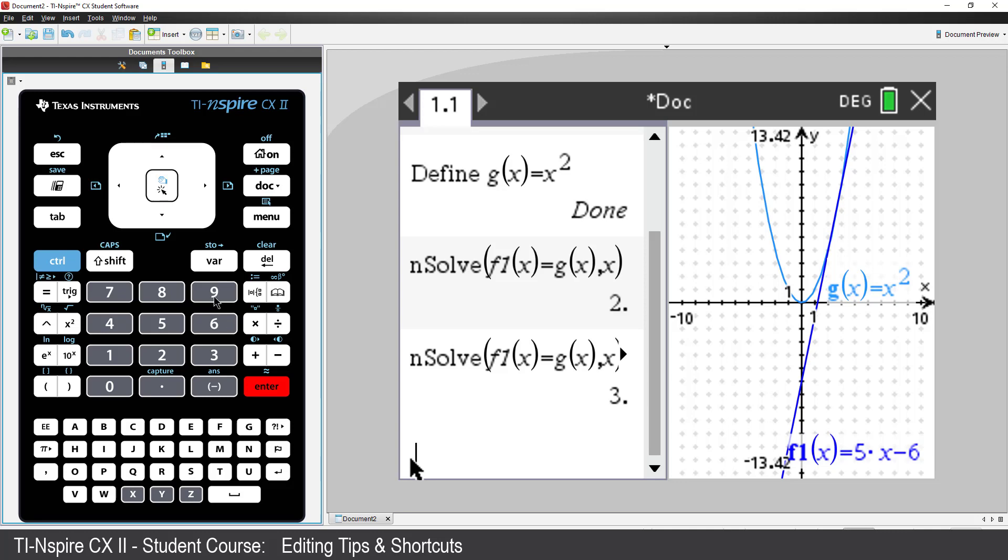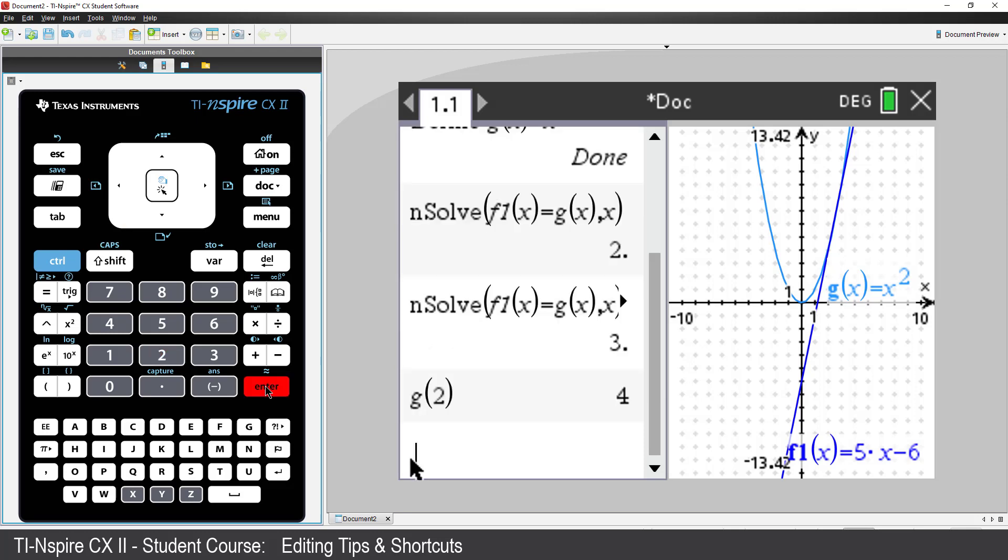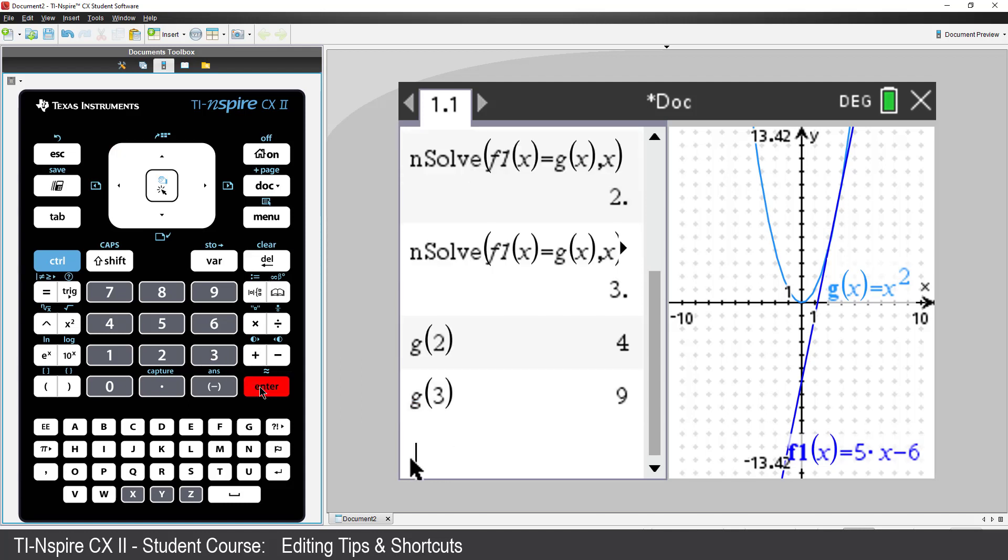I've used function notation for this. So if I want to determine the corresponding Y values, I can just evaluate G of 2 and G of 3, and they give me the corresponding Y values. I could also use the graph to check.